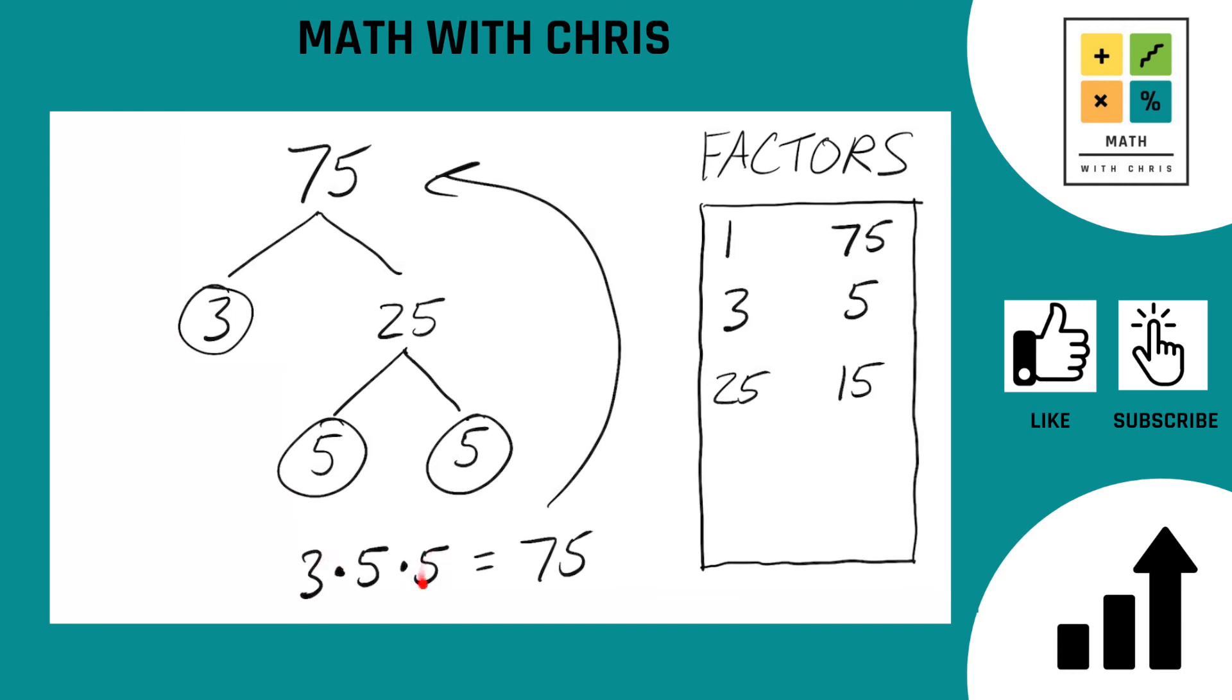Anything else? Here's a 3 times 5. Well, we got 15. 5 times 5, 25. That's all the combinations. We're done.